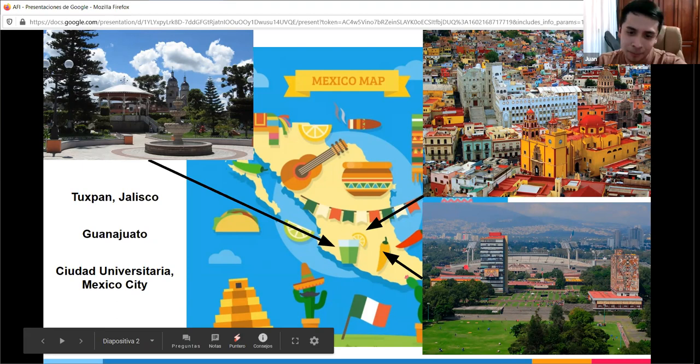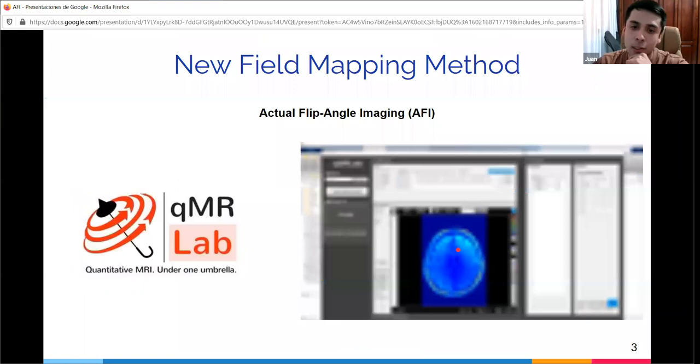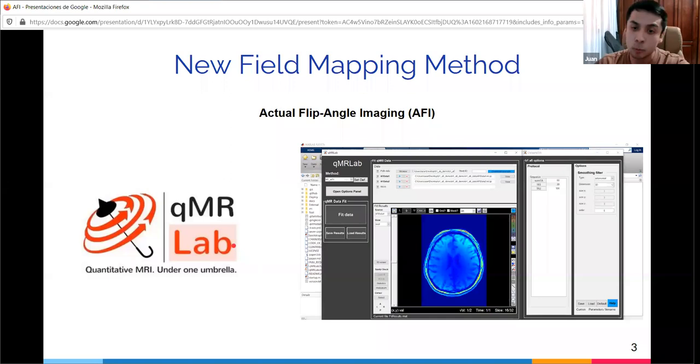After the tour of two Mexican cities, Juan discusses what they did. Matthew closely followed this work and always helped. They added a new field mapping method, the actual flip angle imaging or AFI, to the QMRLab software. He shows the graphical user interface with the AFI method protocol and options to fit the data, plus a module for block simulations.